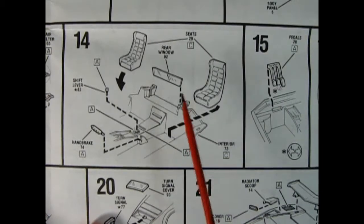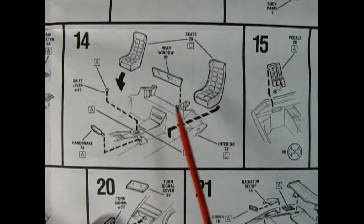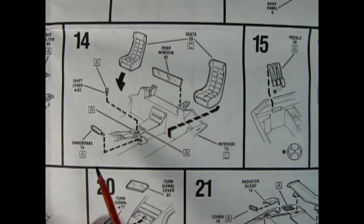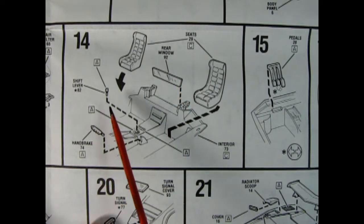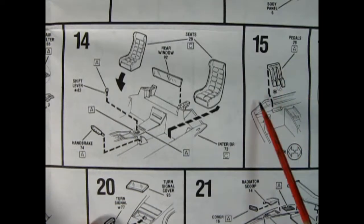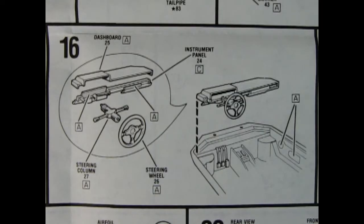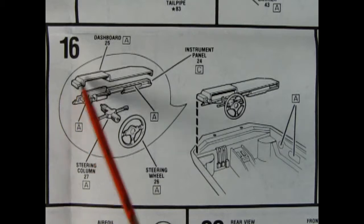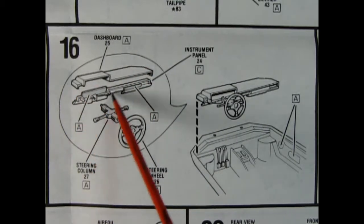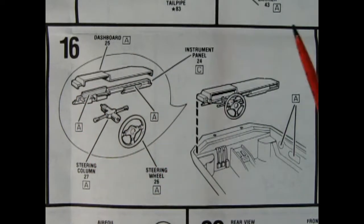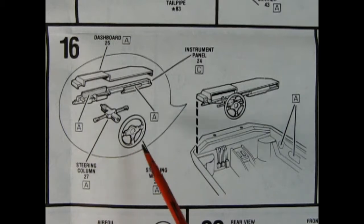Now in panel 14 we can see our bucket seats going in place as well as this rear window and our handbrake and our shift lever. Now that's chrome again but that wouldn't be too hard to replace. And then here we have our pedals dropping in in panel 15. The panel 16 shows our four-piece dashboard going together. You get the top padded bit. You get the instrument cluster and the dashboard and the radio. And here you get the steering column and the steering wheel.